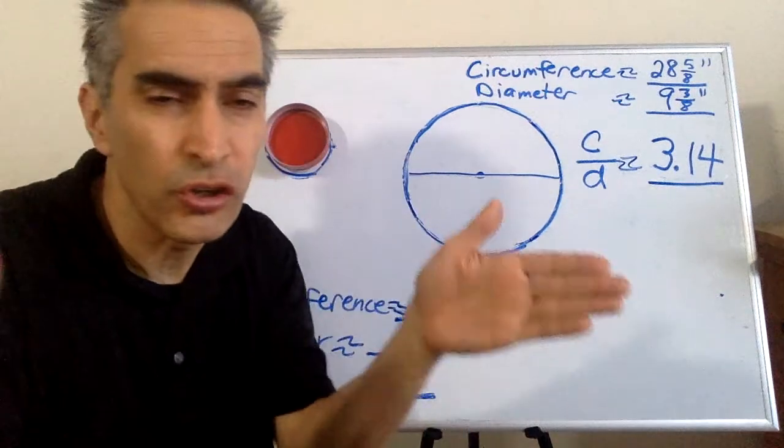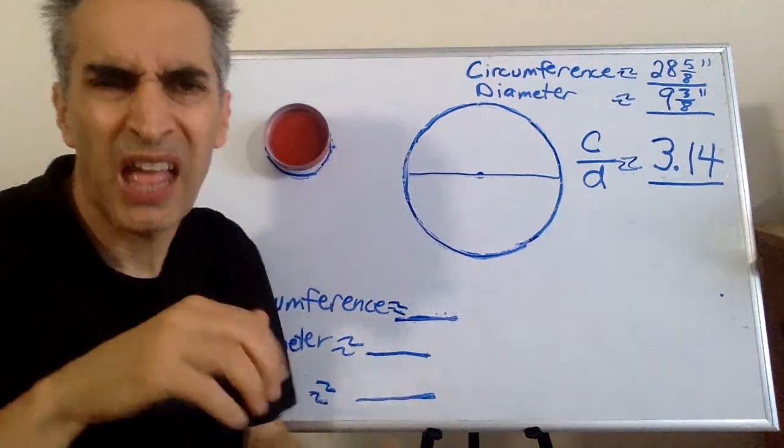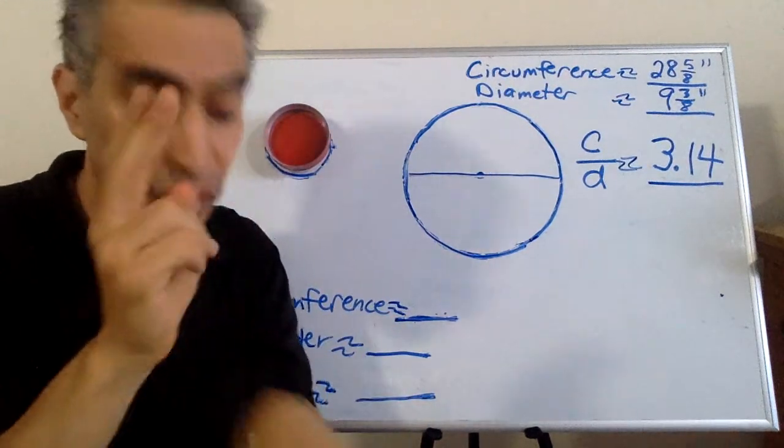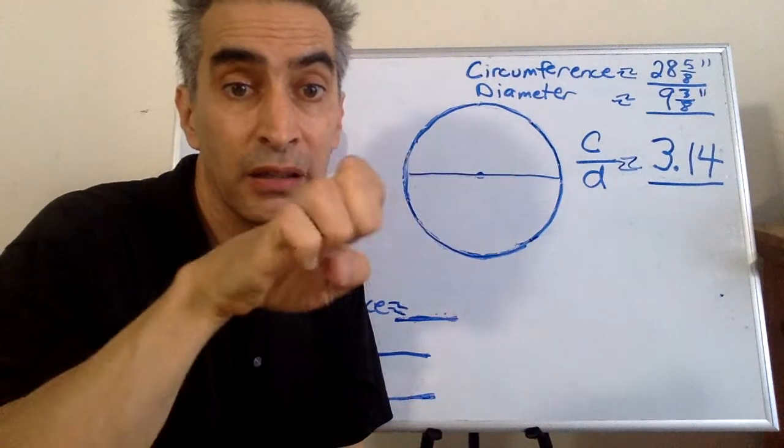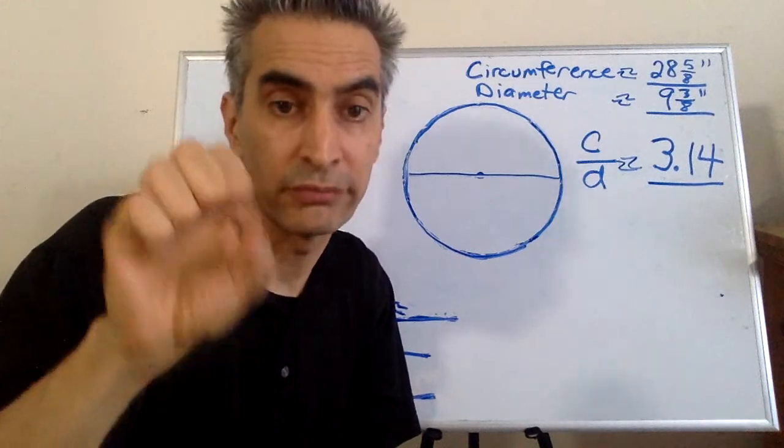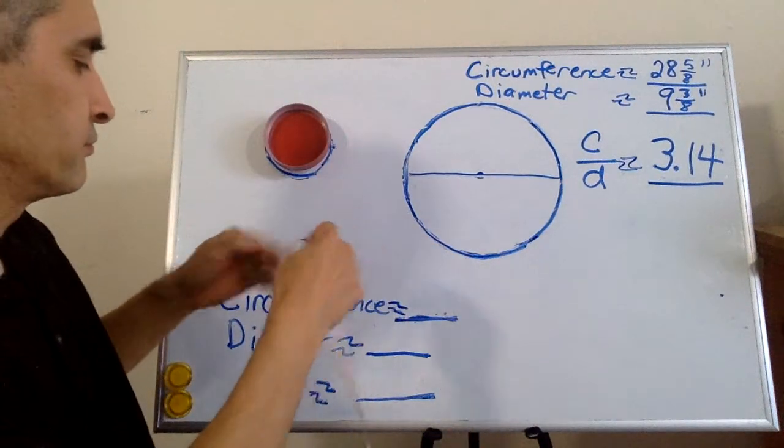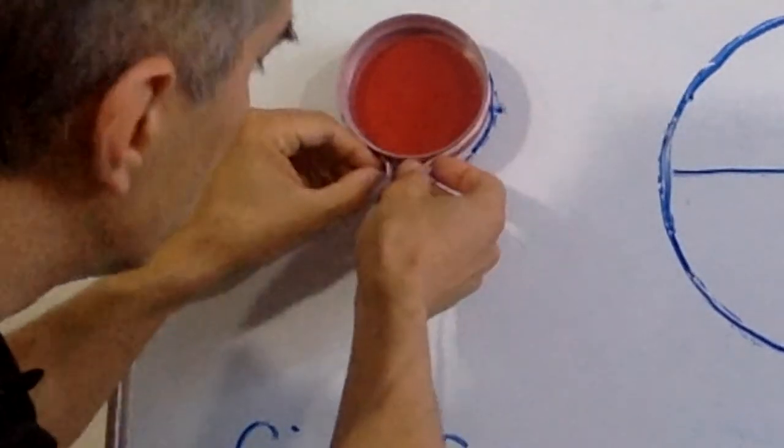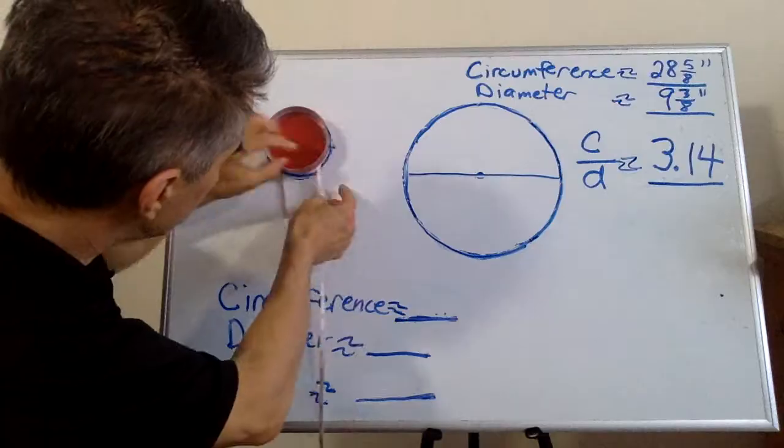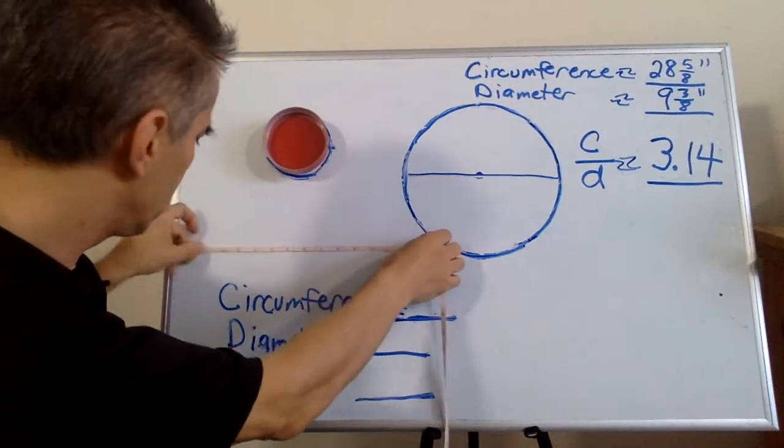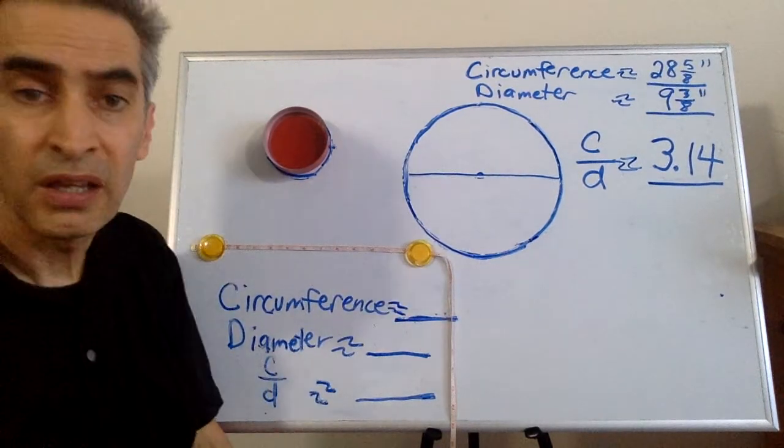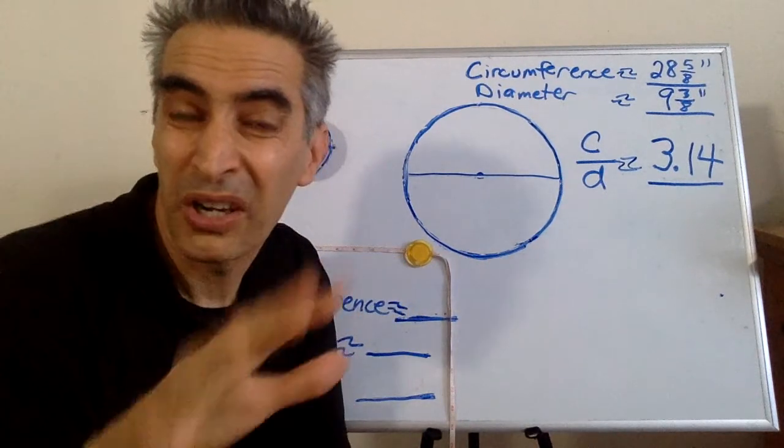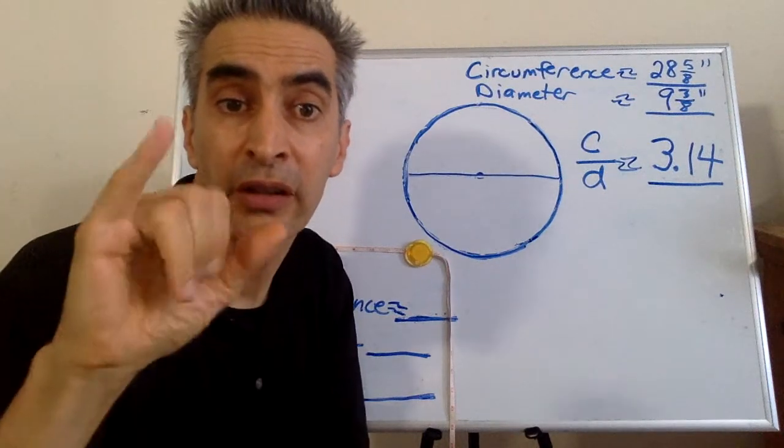Next, same process but for a smaller circle. How do we measure the smaller circle? Right, we're going to use the tape measure. This line measures around 12 and 1 fourth inches.